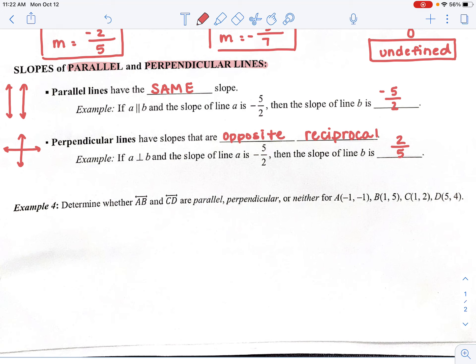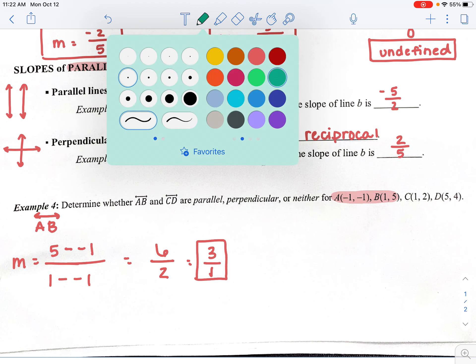Last problem here. It says, determine if AB and CD, if they are parallel, perpendicular, or neither. So in order to do that, we have to find their slope. So we're going to find the slope of AB using those points. And then we're going to find the slope of CD using those points. So first off, it's line AB. So we're going to find the slope here. So I'm going to do y2 minus y1 divided by x2 minus x1. So I've got 5 minus a negative 1 divided by 1 minus a negative 1. That would become 6 over 2, which would simplify to 3 over 1. So there's my first slope.